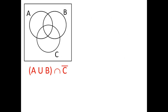The more regions you have, the more complicated your statements can get. Let's say we want to find (A union B) intersect C complement. A union B is everything inside A or inside B or both. Now we intersect that with what is outside of C. That overlap — A union B intersecting with outside of C — gives us the shaded region here.